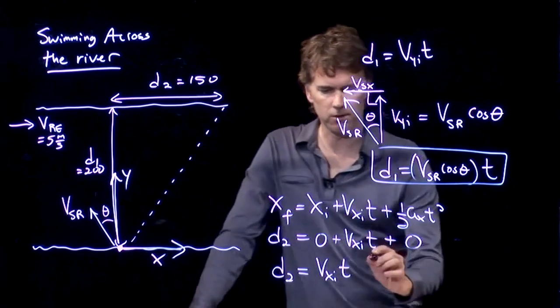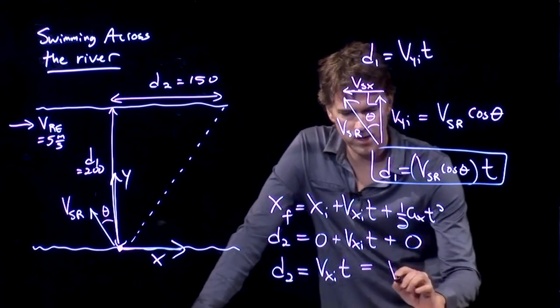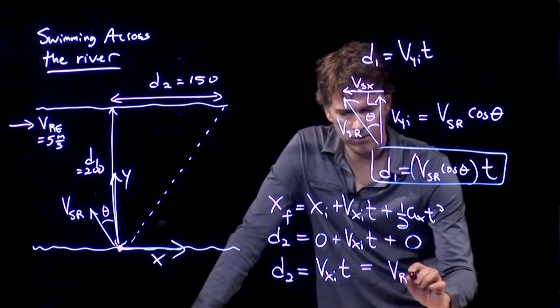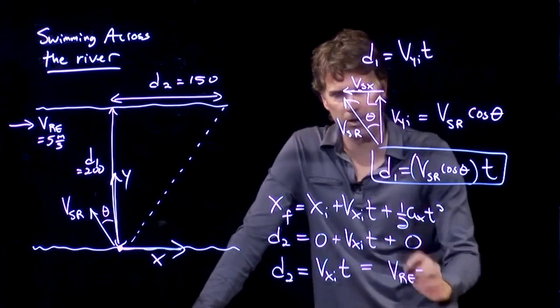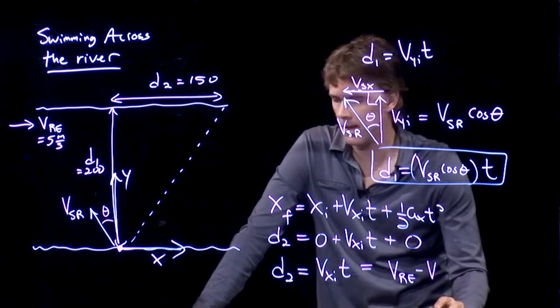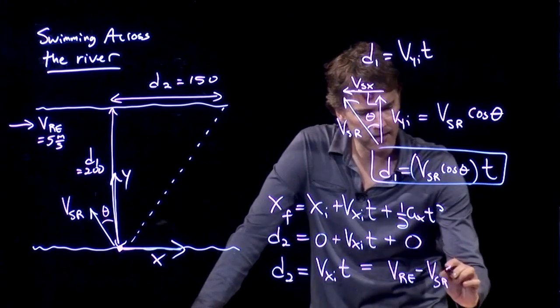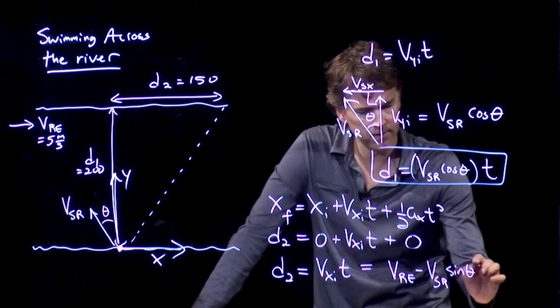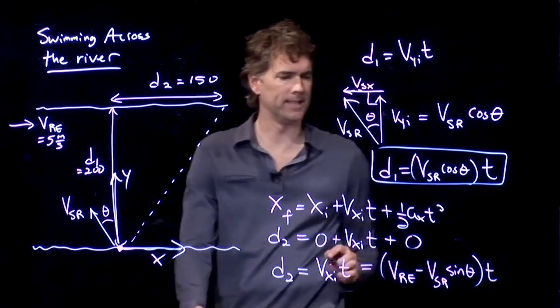And so in fact we need to subtract the two. It's going to be the river relative to the earth, minus this component, the swimmer relative to the river, times sine of theta. And all of that multiplying t.